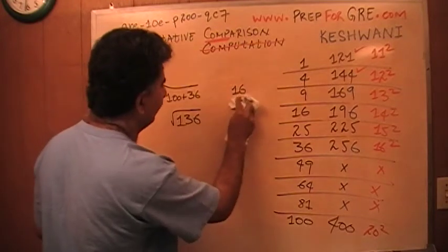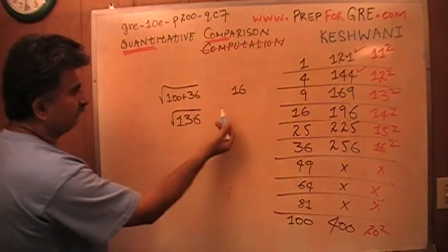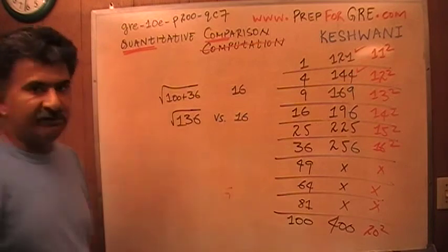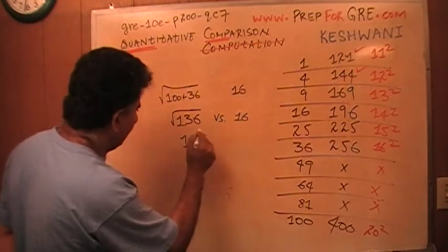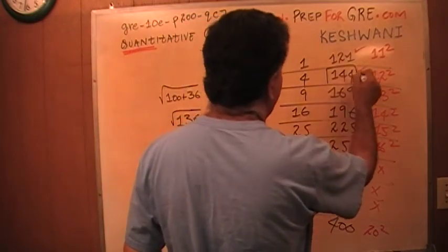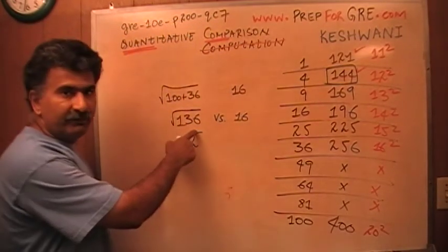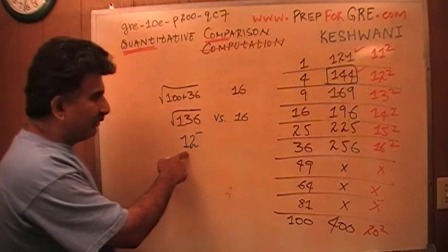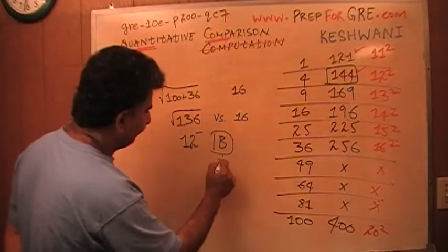And if you know this by heart, this question is very simple, very straightforward. I am asked to compare square root of 136 versus 16. Square root of 136, I do not know what it is, but I do know that whatever it is, is less than 12. How do I know it is less than 12? Because square root of 12 is 144. If square root of 12 is 144, then square root of 136, whatever it is, has to be less than 12. So I am being asked to compare some quantity which is less than 12 versus 16. Obviously the answer is B. That is what we are done. That is it, we are done.